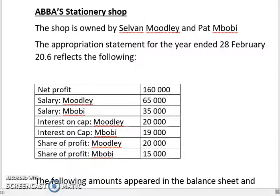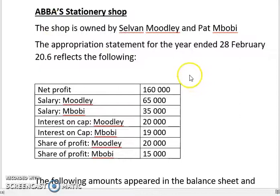Good evening class. It's almost 11 p.m., approaching midnight on the 16th of April, and I'll do a video very quickly. I've only got 15 minutes to try and finish this. The title of this video is Return Indicators and Debt Equity Ratio.